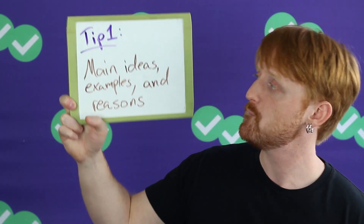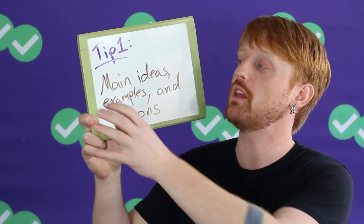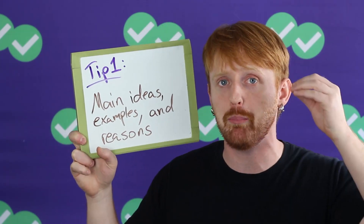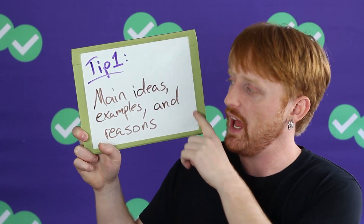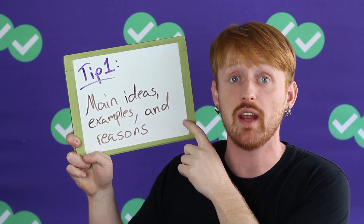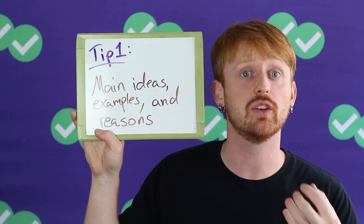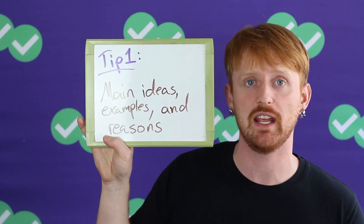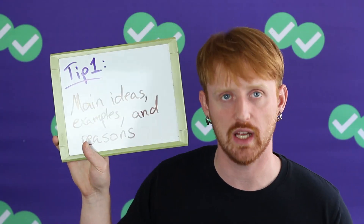You have to, for example, avoid the small details. You need main ideas, examples, and reasons. So you need the big thoughts, the big parts of a lecture or a conversation, and then it helps to only note the details that are very directly related to the main idea — an example of the idea or a reason for the idea.